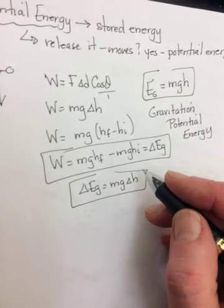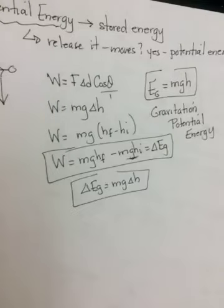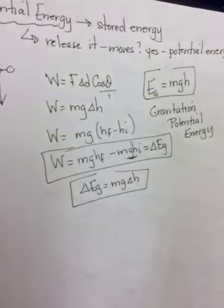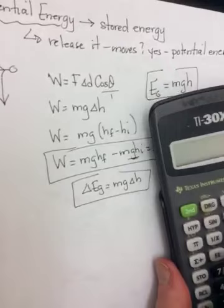In real life, gravitational potential energy, usually the initial is zero. If I ask you, what's the change in gravitational potential energy when I lift this calculator from the desk up to my shoulder? We would call the height of the desk, where it's sitting to start with, zero.